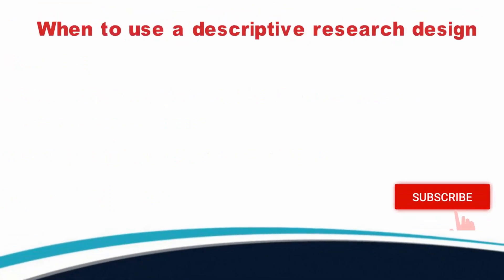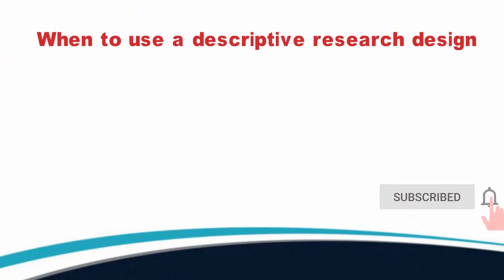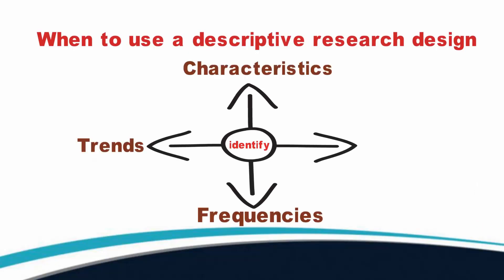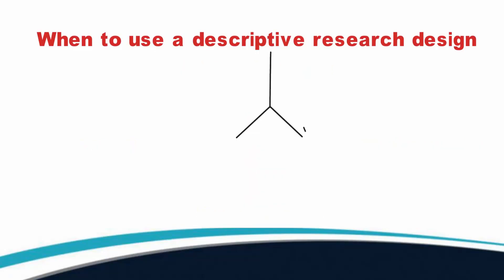When to use a descriptive research design. Descriptive research is an appropriate choice when the research aim is to identify characteristics, frequencies, trends, and categories. It is useful when not much is known yet about the topic or problem. Before you can research why something happens, you need to understand how, when and where it happens.